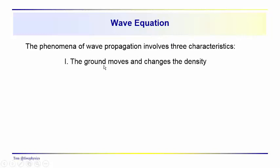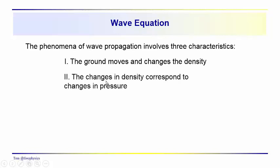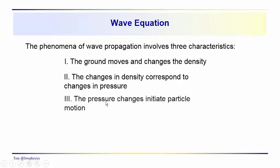First, the ground moves. If we create some disturbance — a source point, like banging on the ground with a hammer — we move the ground. That changes the density, and these changes of density are going to produce changes in pressure. These pressure changes then should initiate additional particle motion. These are the basic characteristics which we'll develop quantitatively, turning these expressions into quantitative form, then linking them together to come up with the wave equation.